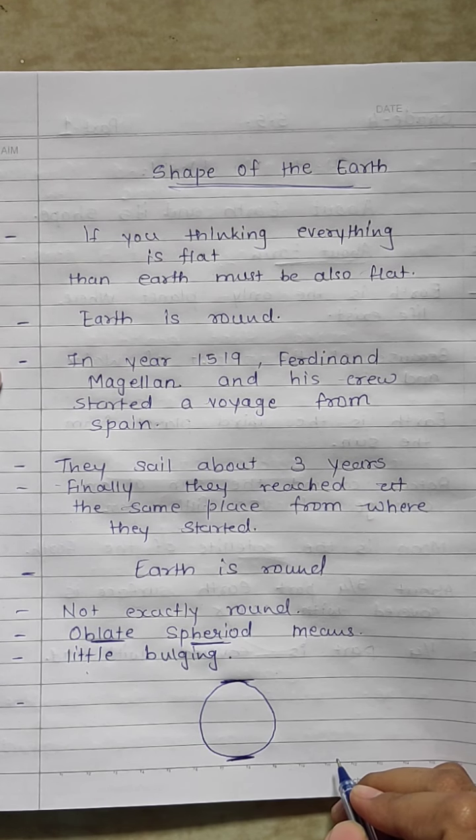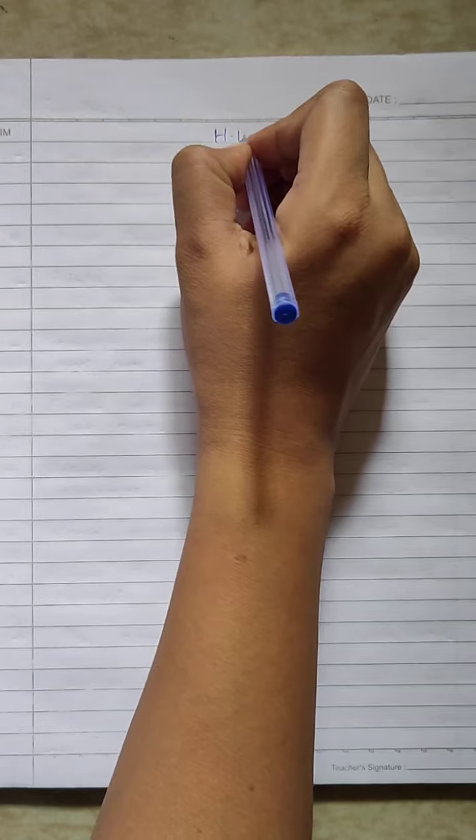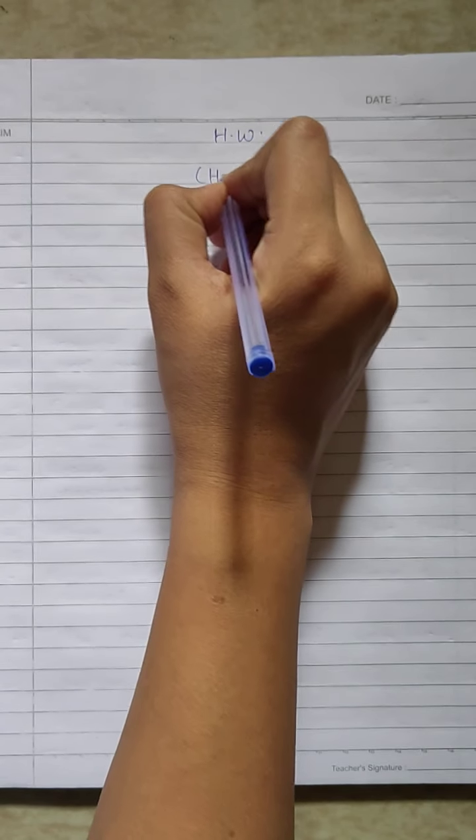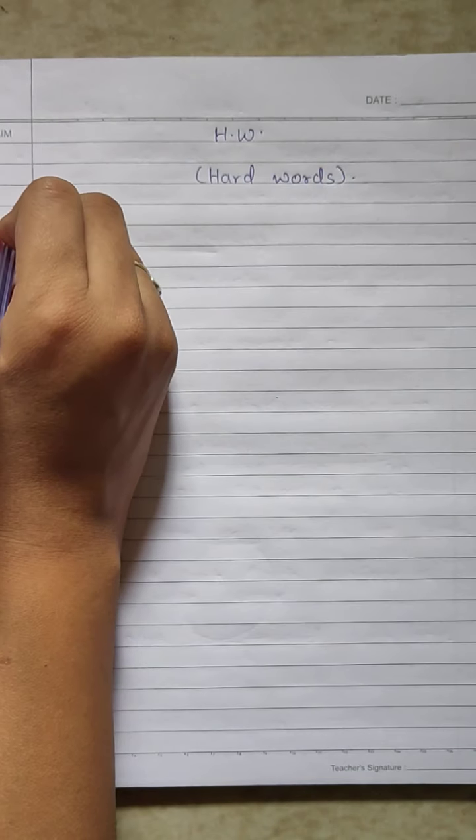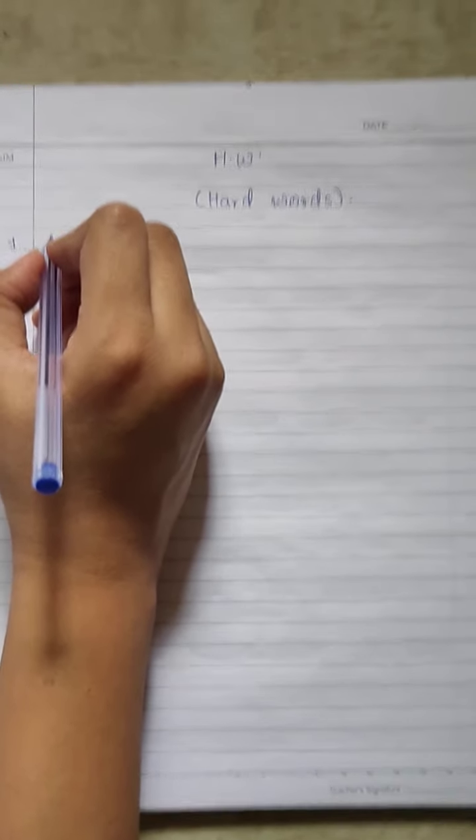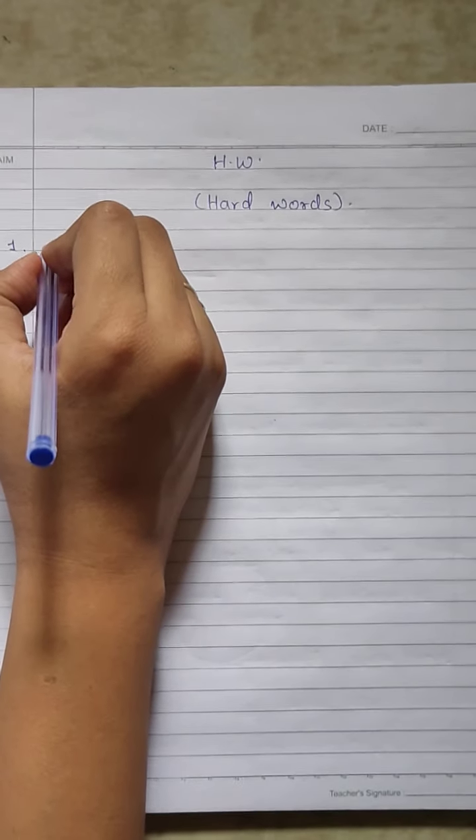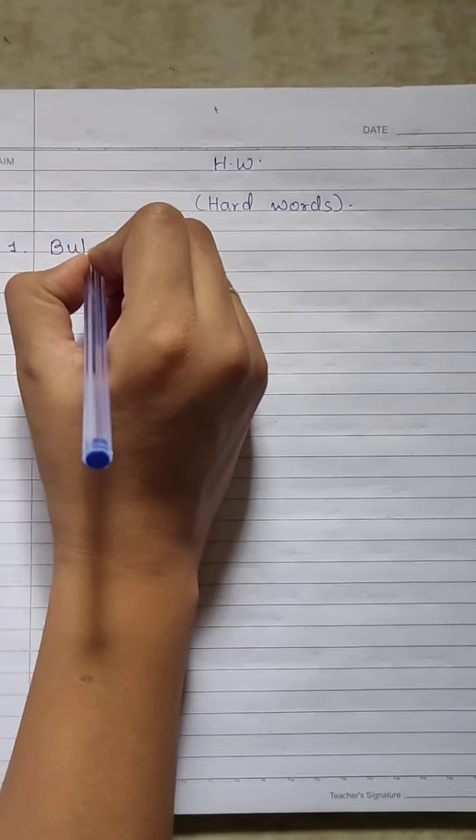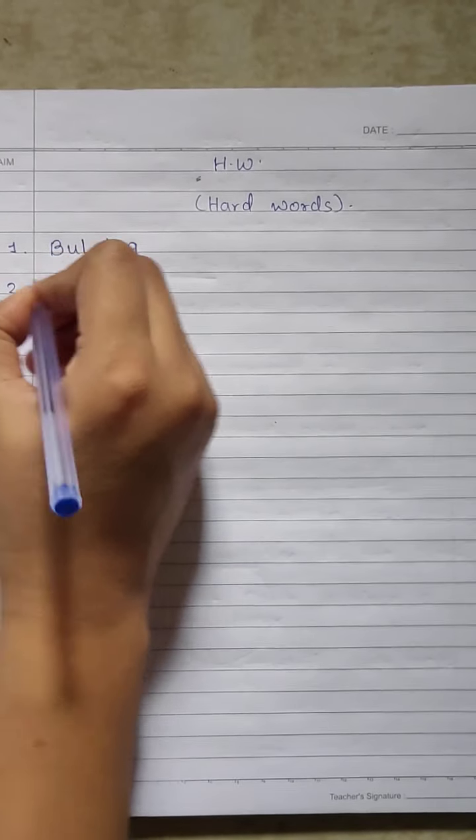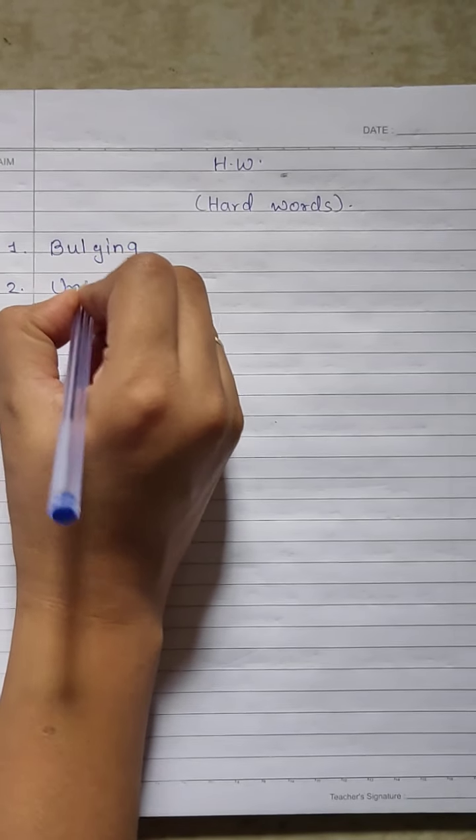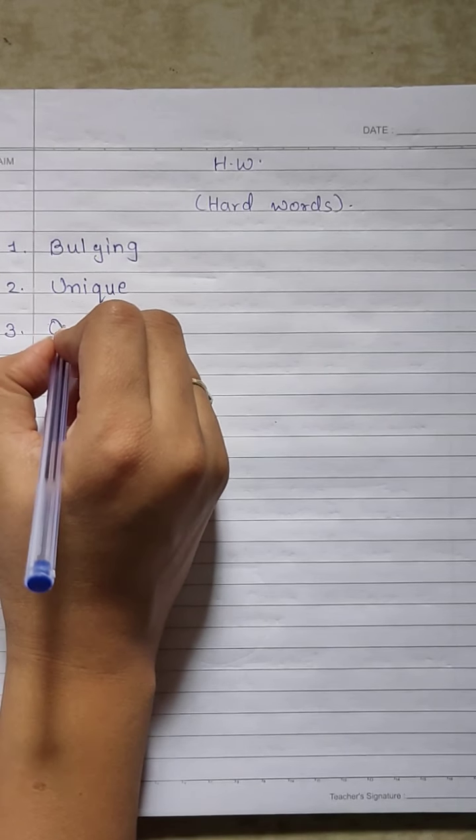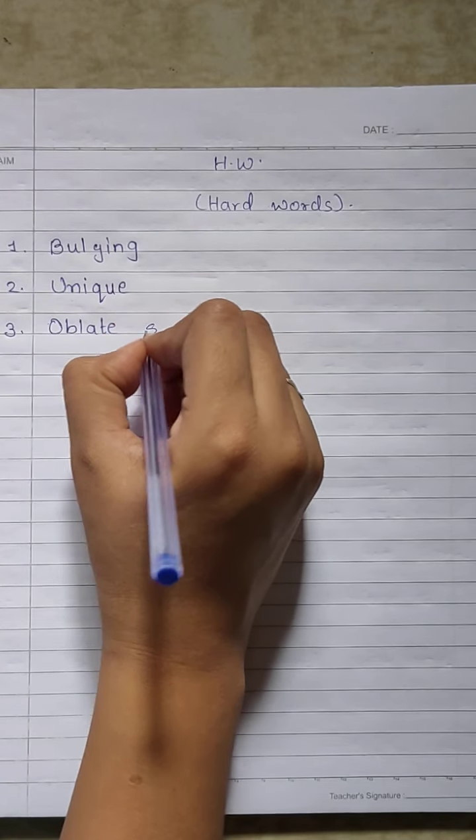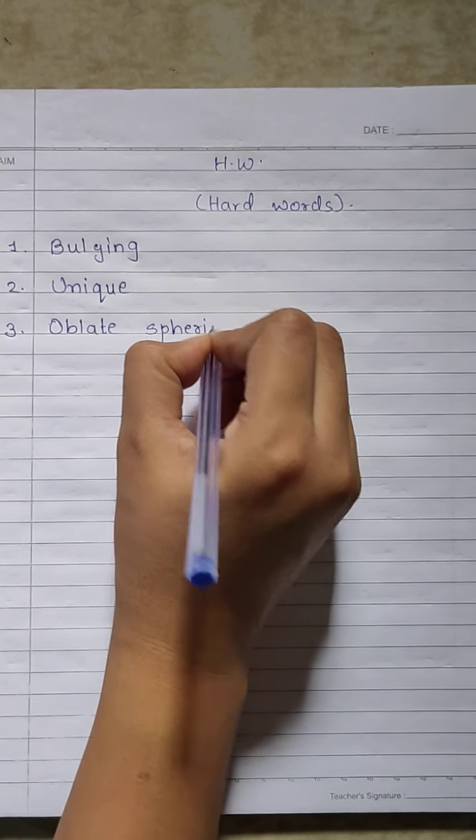I would like you to note down the homework related to this topic. Hard words: First is bulging, B-U-L-G-I-N-G. Second is unique, U-N-I-Q-U-E. Third is oblate spheroid, O-B-L-A-T-E S-P-H-E-R-O-I-D. Fourth is Ferdinand Magellan, M-A-G-E-L-L-A-N.